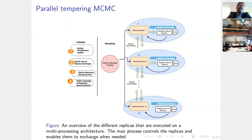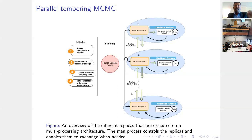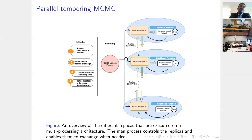We use interprocess communication to exchange the replicas. You can run this in a parallel computing framework where each process is a replica process, distributed over multiple cores, each with its own neural network and data. With interprocess communication you have replica exchange between neighboring replicas.